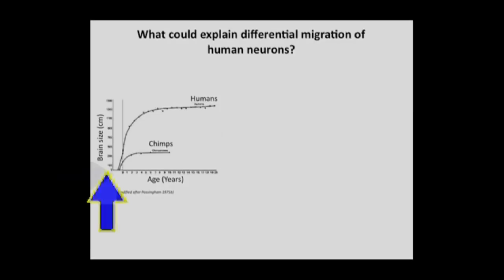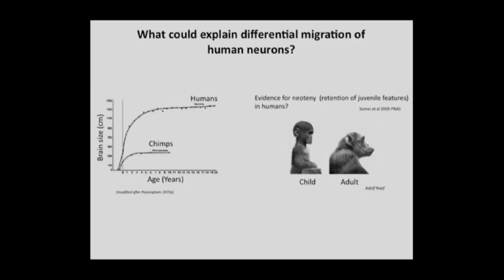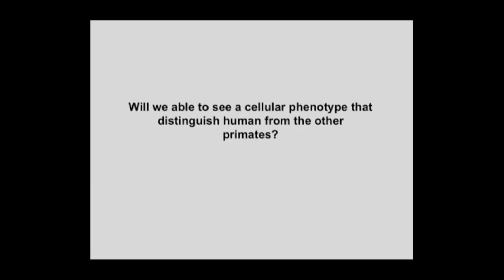Would neuronal migration differences make sense as a phenotype? Brain size data shows that a chimpanzee brain reaches its developmental plateau about five years earlier than a human brain — evidence for neoteny, the retention of juvenile features in humans. Rushing through development may compromise neuronal wiring; the brain needs time to make proper connections. We are now investigating whether such phenotypes can be seen in culture.